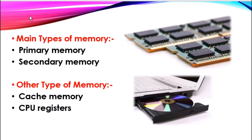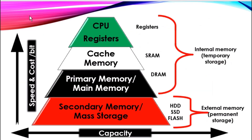The memory hierarchy diagram divides the memory system into four categories: registers, cache memory, primary memory, and secondary memory. As we can see in this diagram, speed and cost per bit increase in the upward direction of the memory hierarchy, while the storage capacity grows in the downward direction from the smallest to the largest in size.